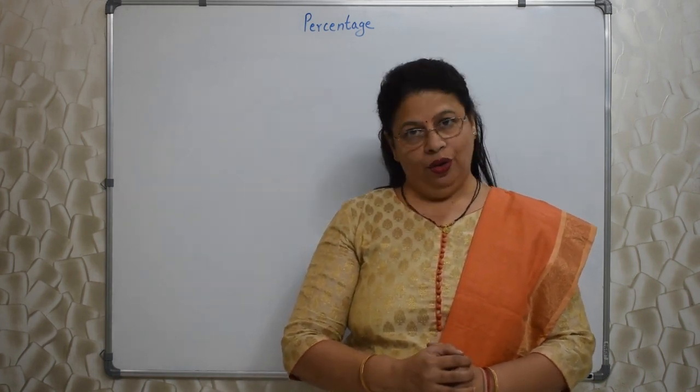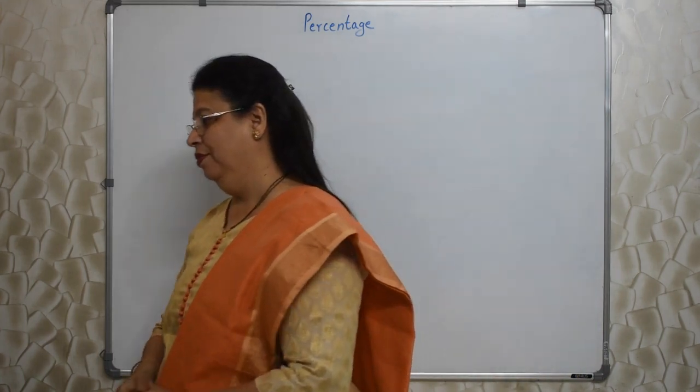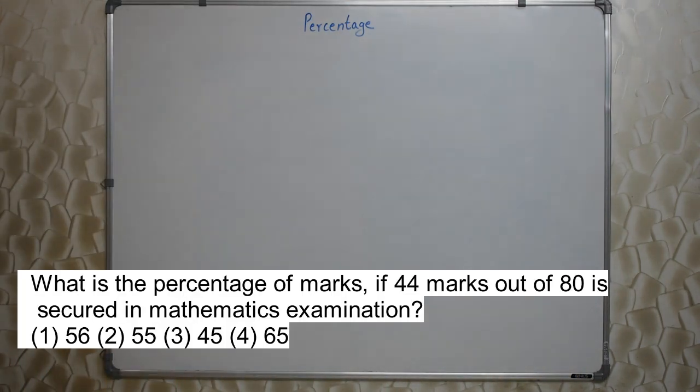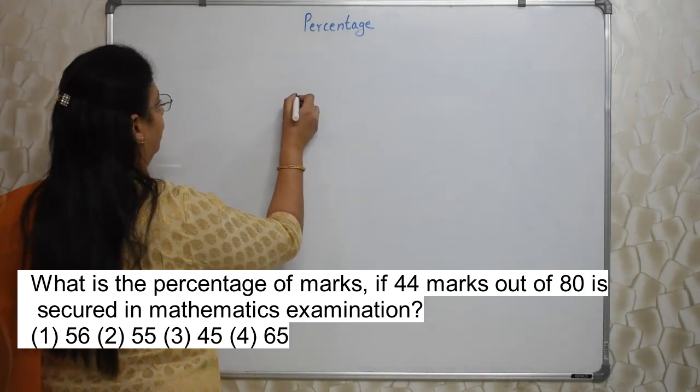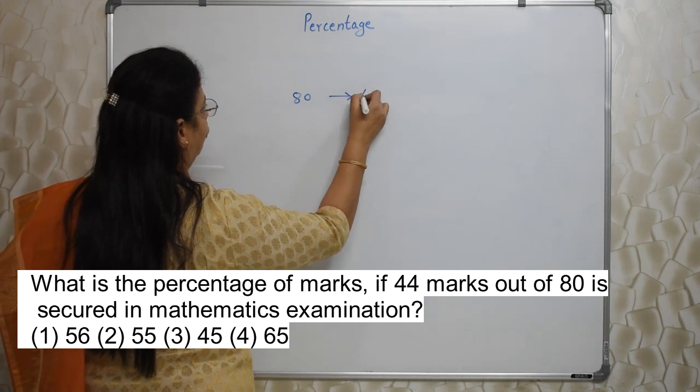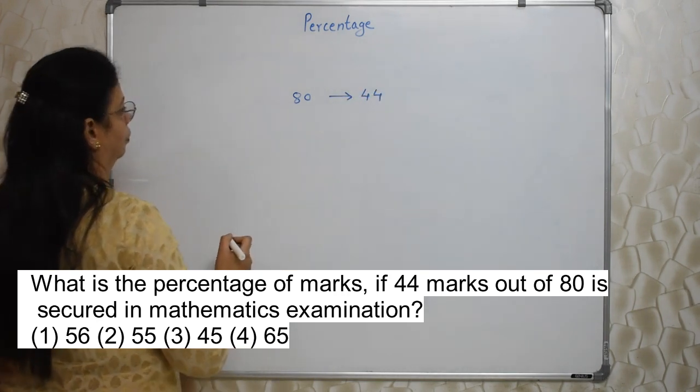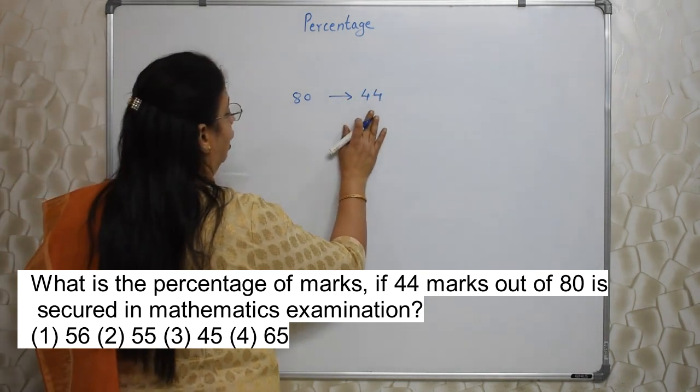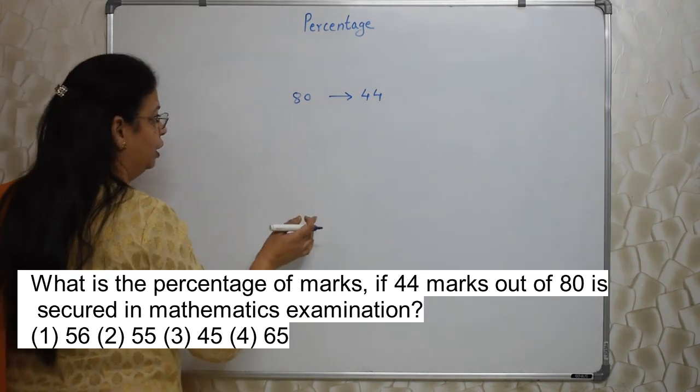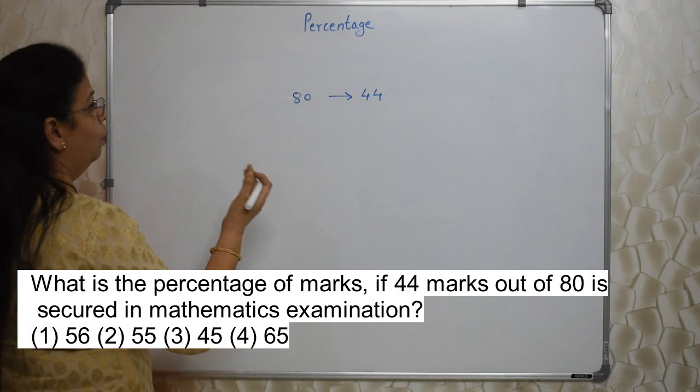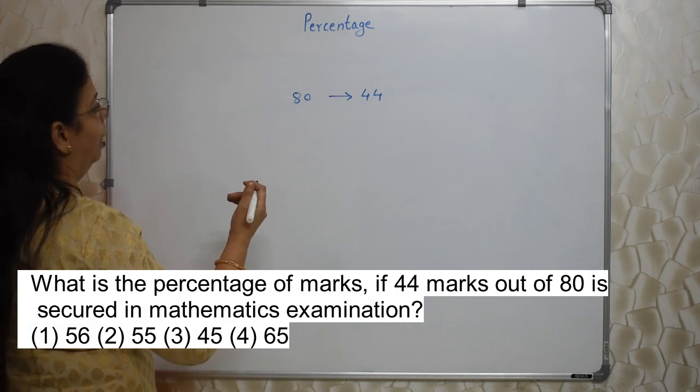First sum will appear on your screen. What is the percentage of marks if 44 marks out of 80 is secured in mathematics examination? Very very easy. 80 main se kitna mila hai? 44. Very bad on. And they are asking how much percentage this is.